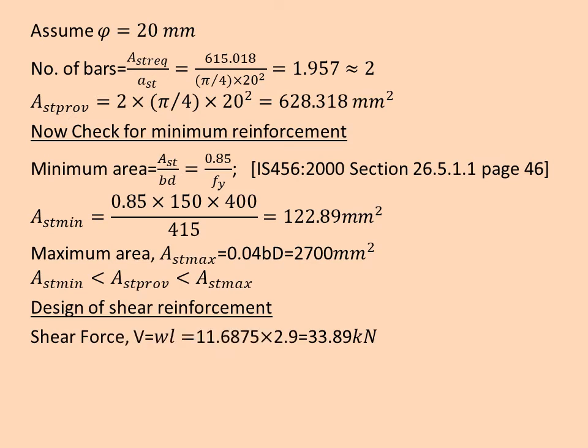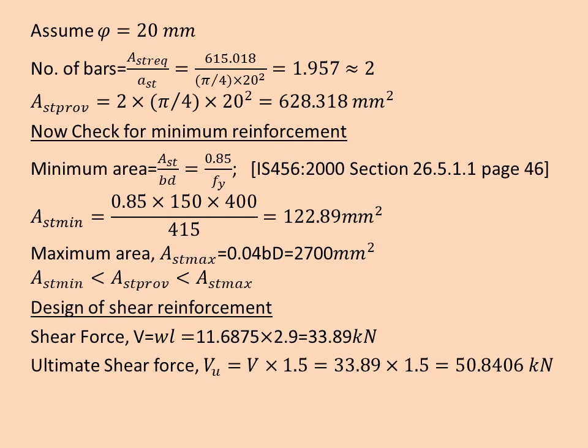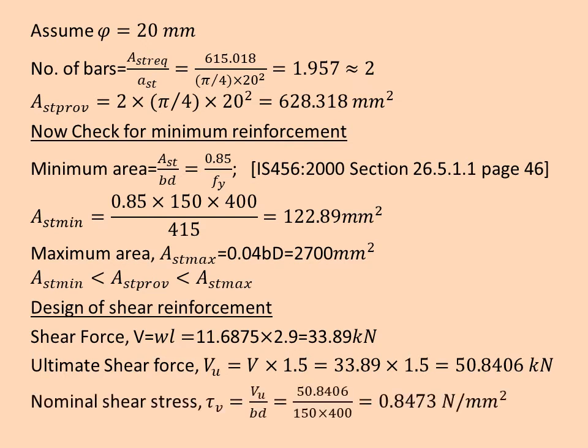Then we check the shear reinforcement. Shear force for cantilever beam is equal to actual force times L effective. We substitute and we get 33.89. Ultimate shear force VU is equal to, we multiply with factor of safety. We are calculating actual shear force now. That's why W is total load times L effective. Then we multiply with FOS to get the ultimate shear force.